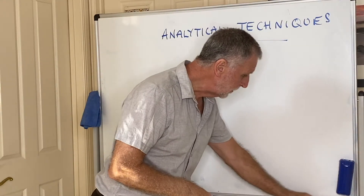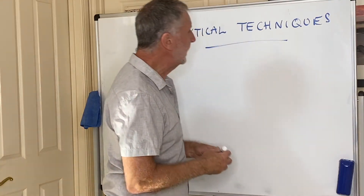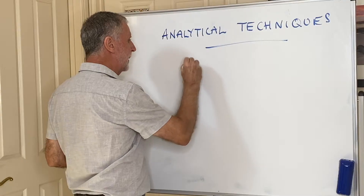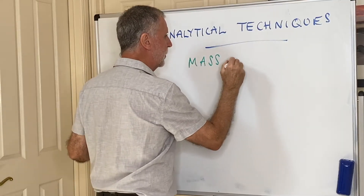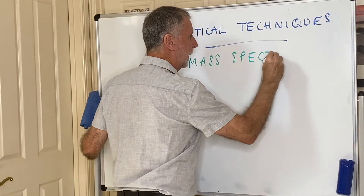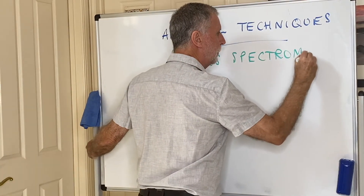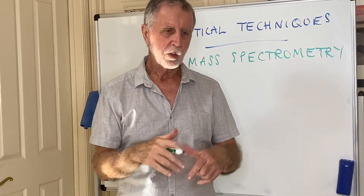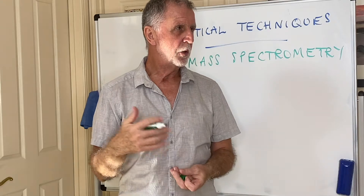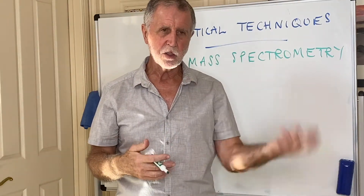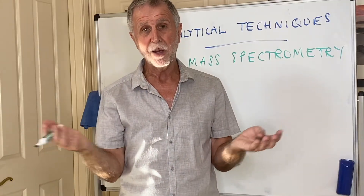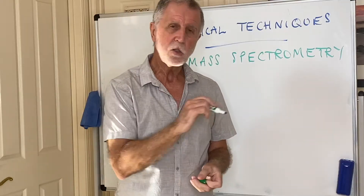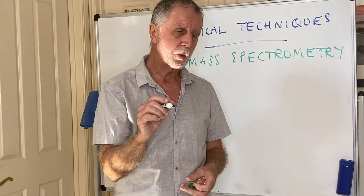The first technique is mass spectrometry, which you will have met before but probably not in this way. You will have definitely met it in Units 1 and 2, where you were given isotopes of an element with their relative abundances and masses, and asked to work out the relative atomic mass. That is not the kind of question they're going to ask you now.